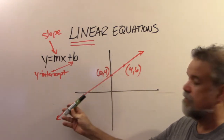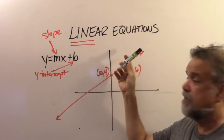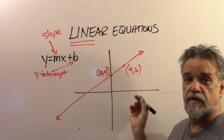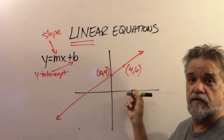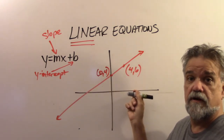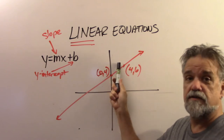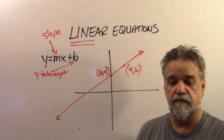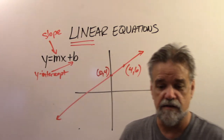Going from left to right upward, the slope is going to be positive. Left to right going down means it's going to be negative. If it's horizontal, parallel with the x-axis, that means it's going to be zero. The steeper it is, the higher the slope; the less steep it is, the lower the slope.